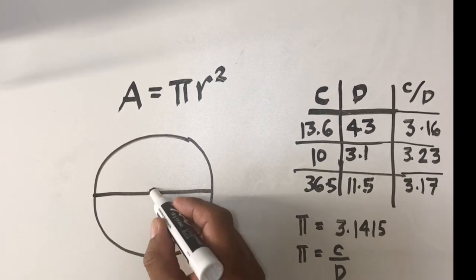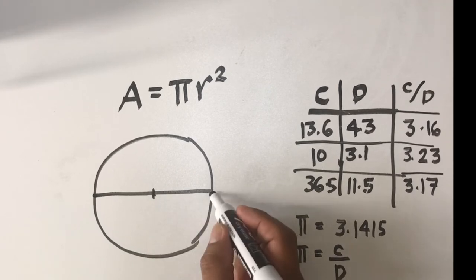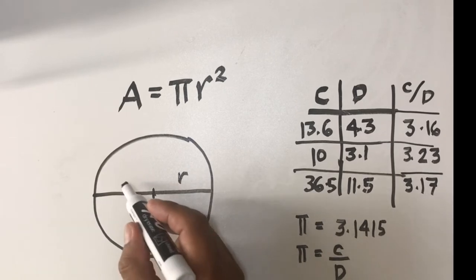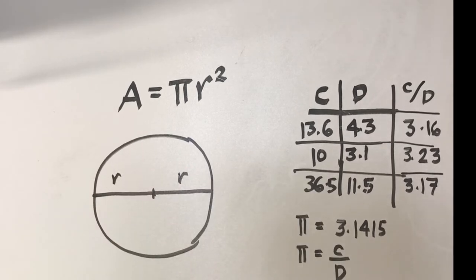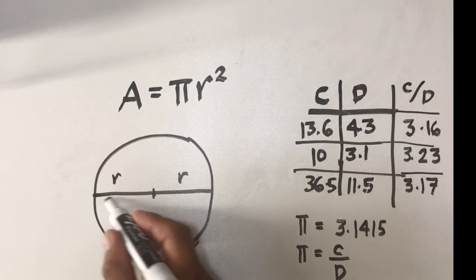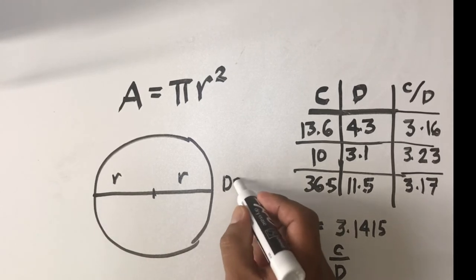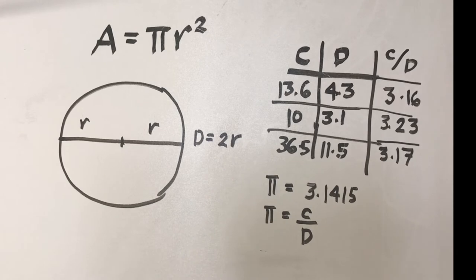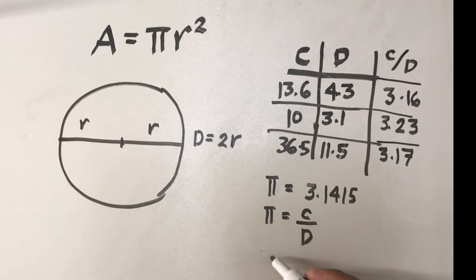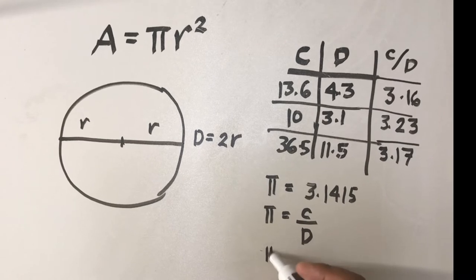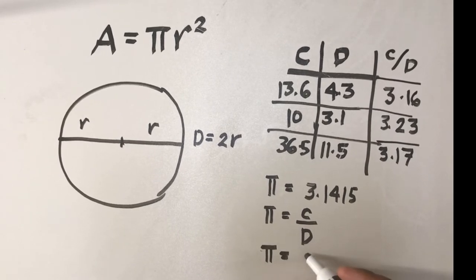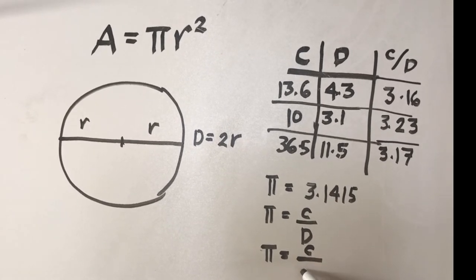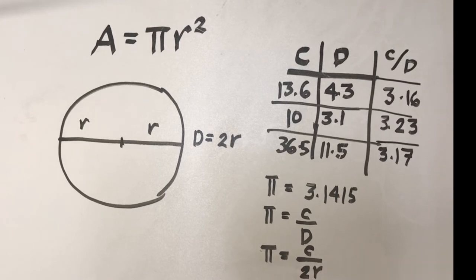Now if you have a circle, and this is the diameter, from the center of the circle going to the edge of the circle we call that as the radius. And one diameter is equivalent to two radius, so D is equal to twice the radius, and from that we can rewrite this part to be π is equal to C over 2r, twice the radius.